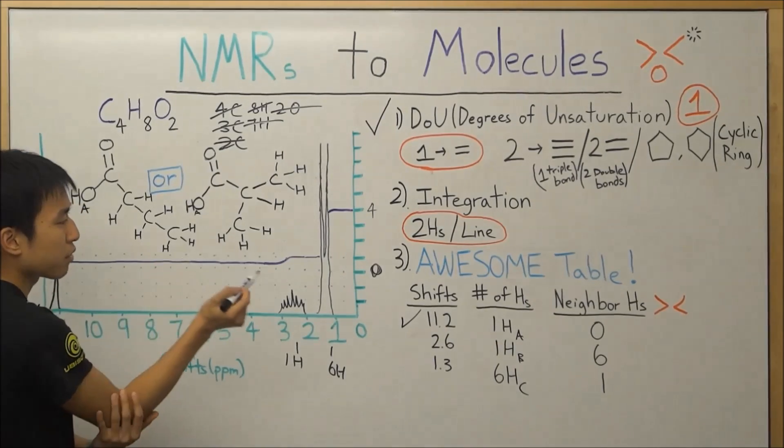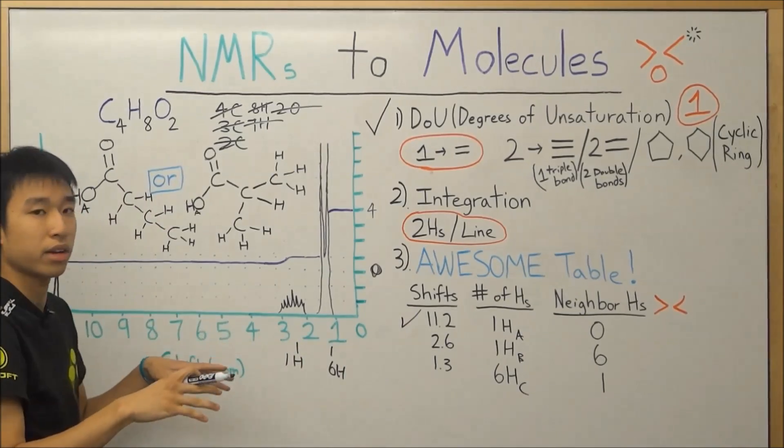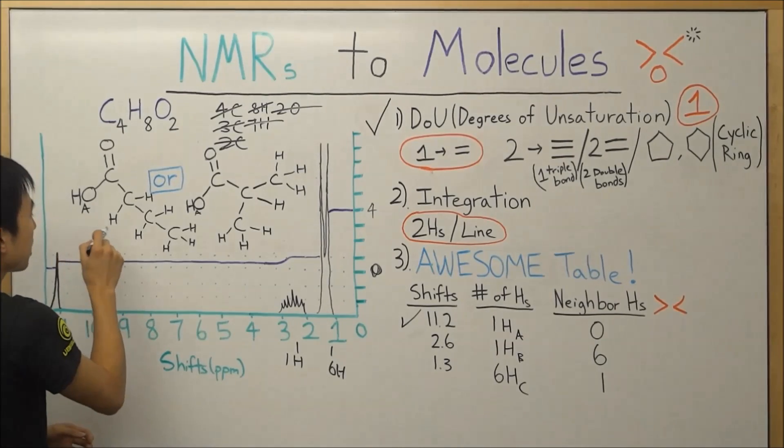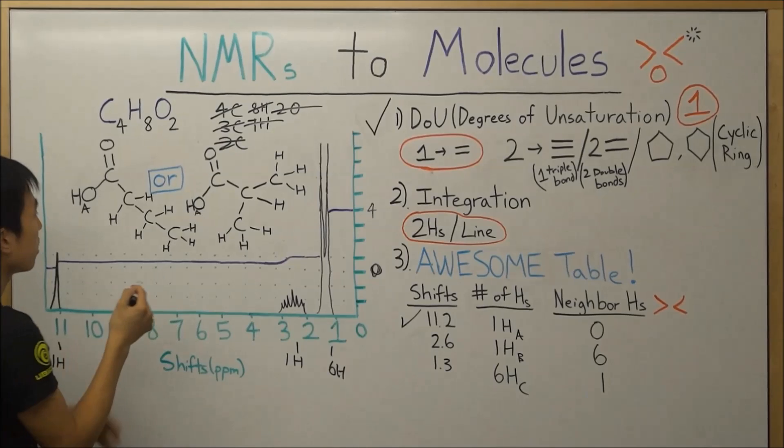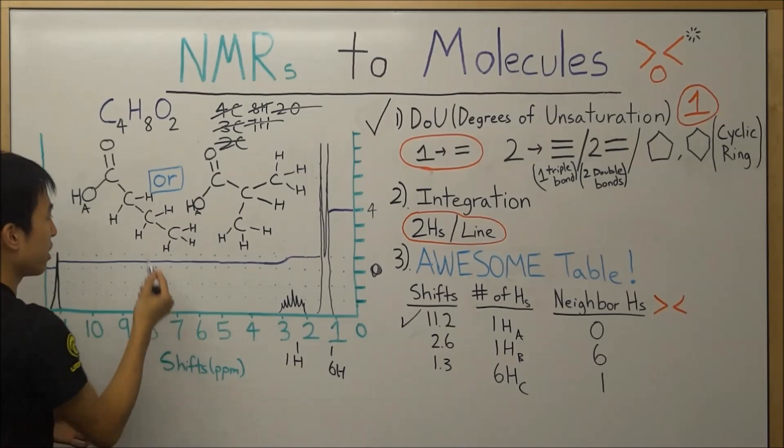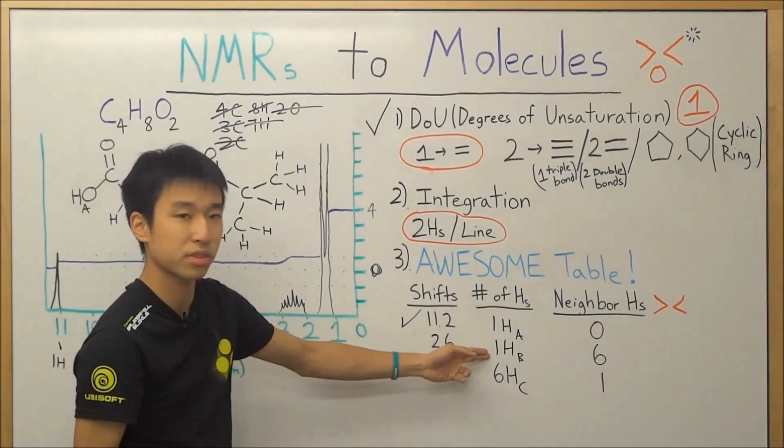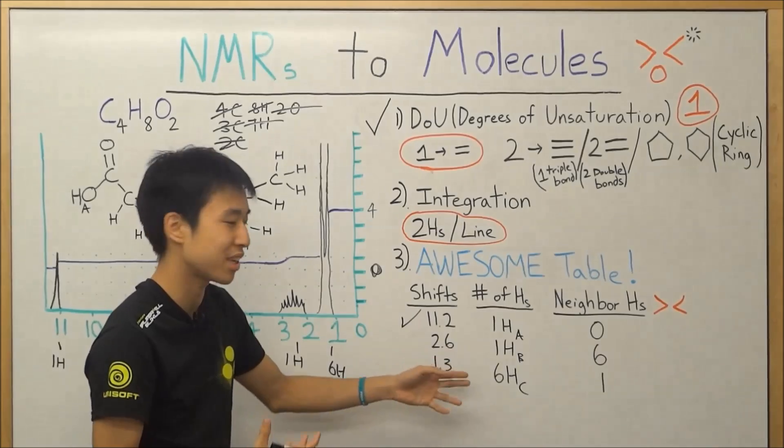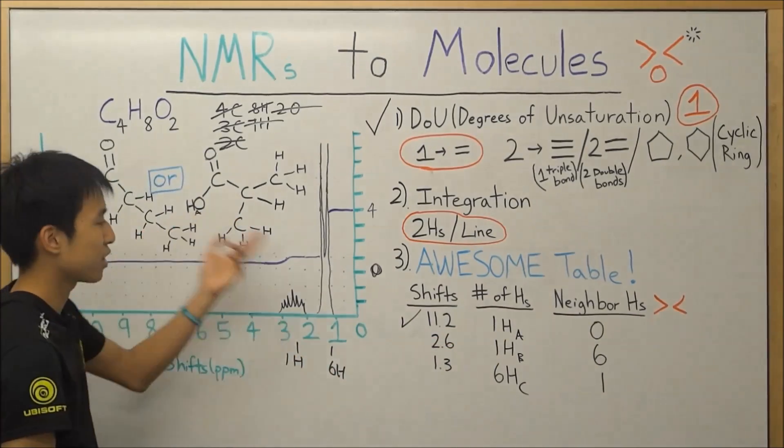But we are looking for one hydrogen that's being split by six neighbors that are non-equivalent to this original guy. Well, we don't really have that in this molecule over here. Because we have these two hydrogens are equivalent, these two hydrogens are equivalent, and these three hydrogens are equivalent to each other.